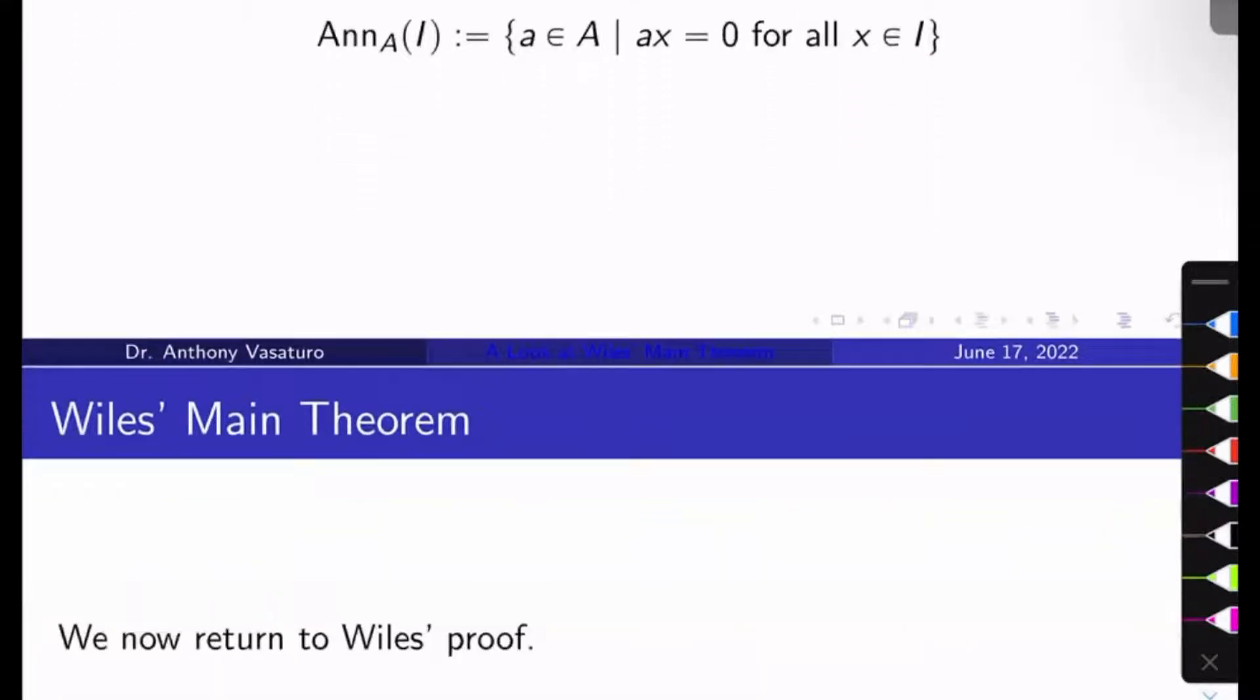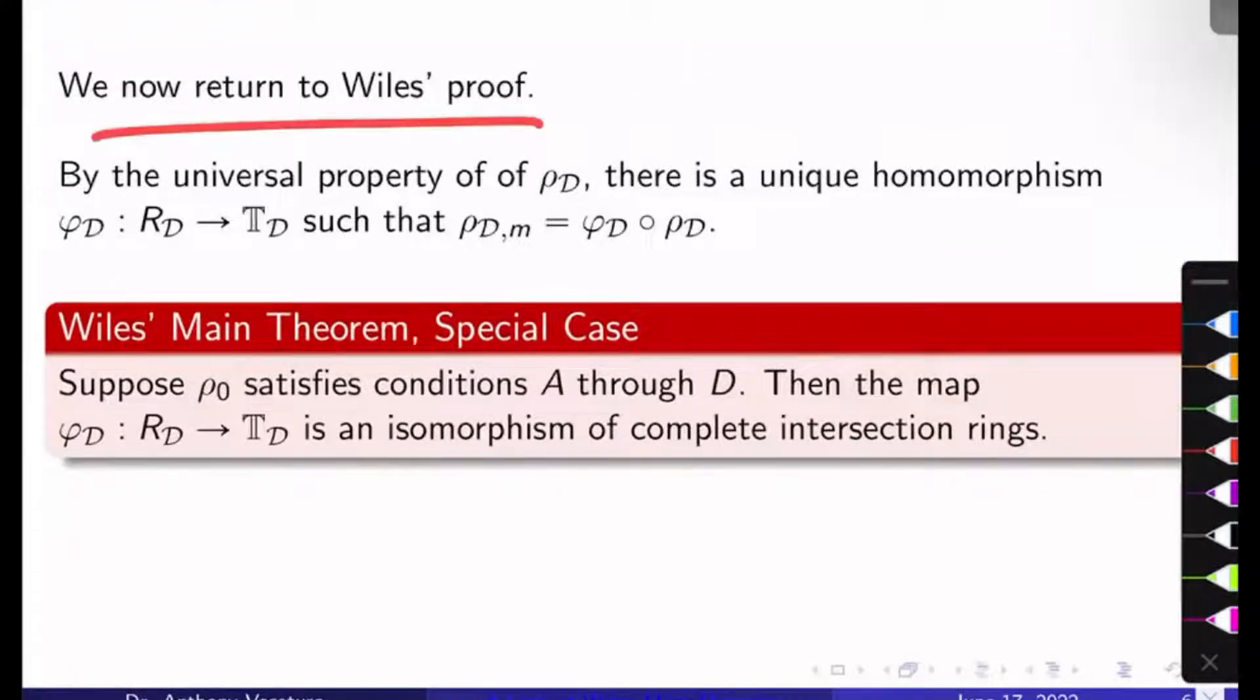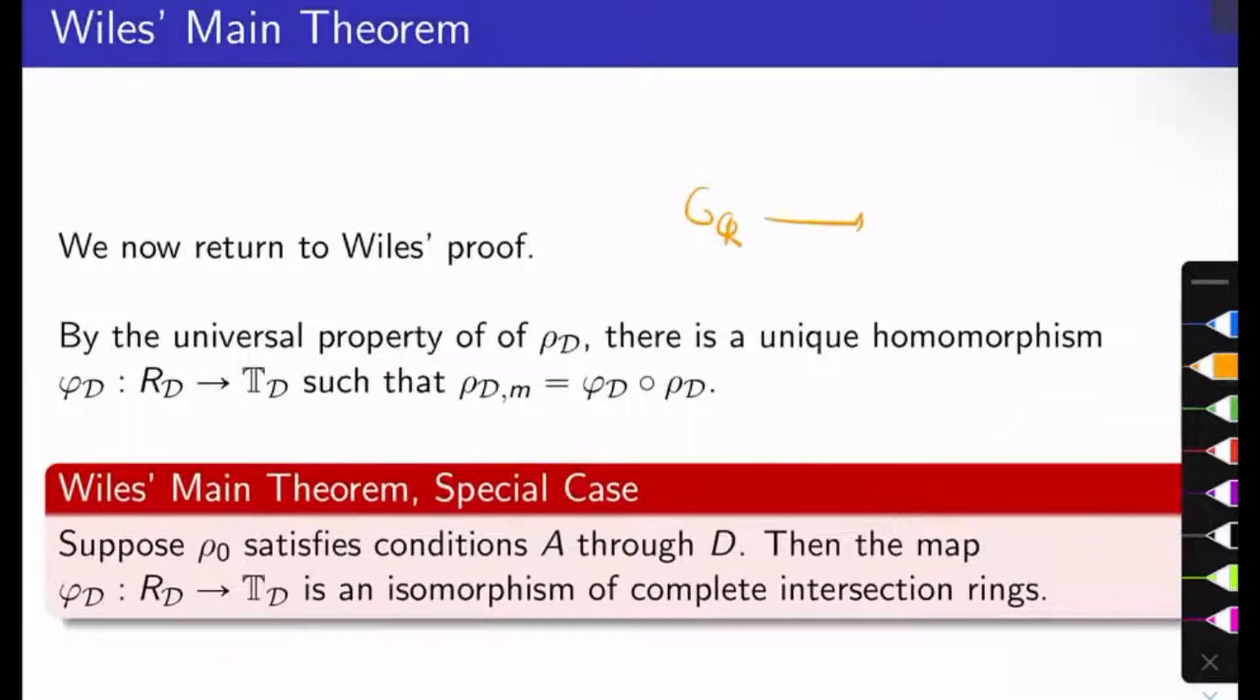I think we have enough commutative algebra to actually state Wiles' main theorem. Let's return to Wiles' proof now. Keep this in mind: we have the Galois group here, we have rho-naught going to GL2K, then we've got this universal type D deformation rho_D headed up to GL2 of RD.